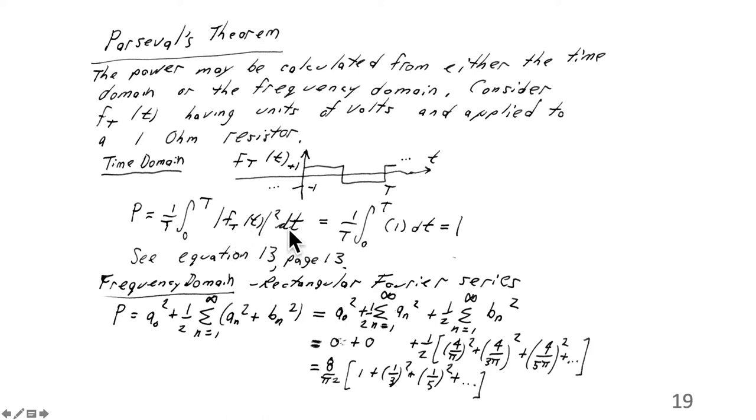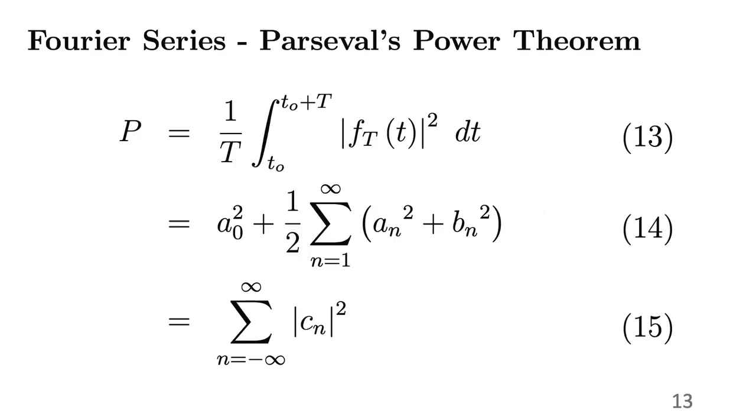If you multiply by time, that would give you the total energy. Averaged over one period divided by time gives you the power back. And if we integrate that for our square wave example, we get one. I said, see equation 13, page 13, here. Equation 13, page 13.